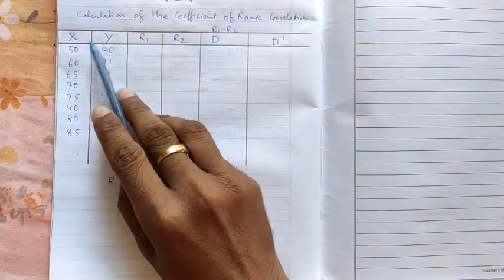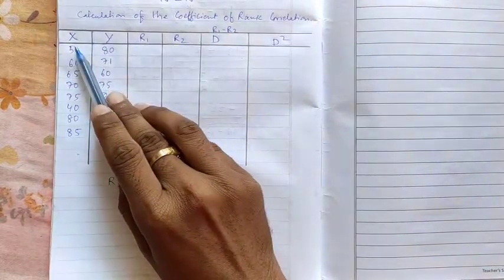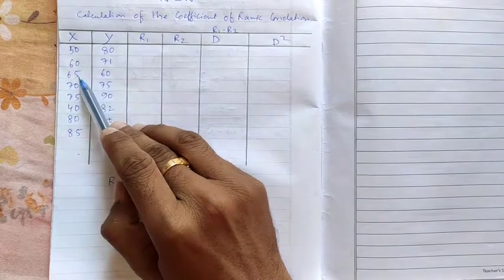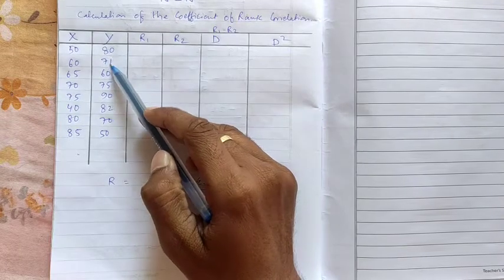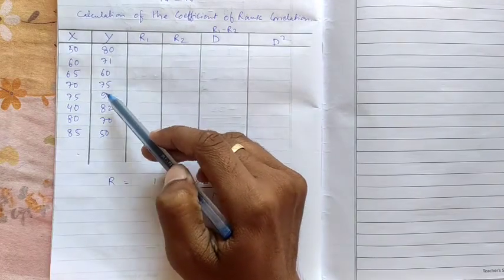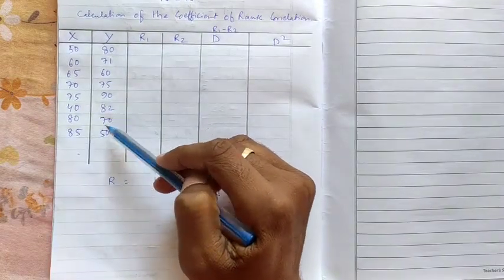So this is the question. So here x and y variables are given. Then x are 50, 60, 65, 70, 75, 40, 80, and 85. And y 80, 71, 60, 75, 90, 82, 70, and 50.